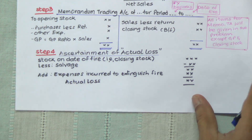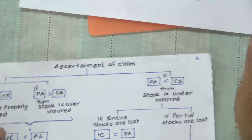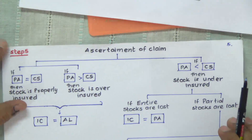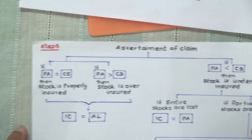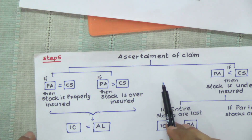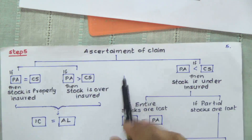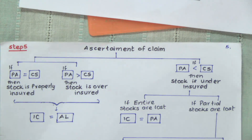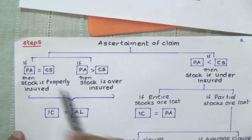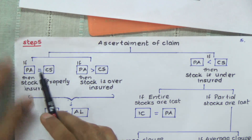In continuation of the procedures, we have step five — ascertainment of claim. This is a very important step. Here we have PA, and PA stands for policy amount.